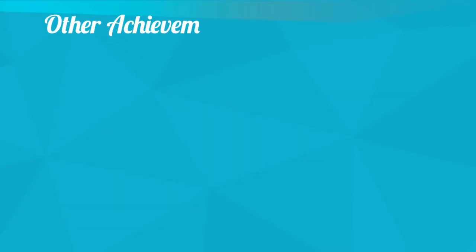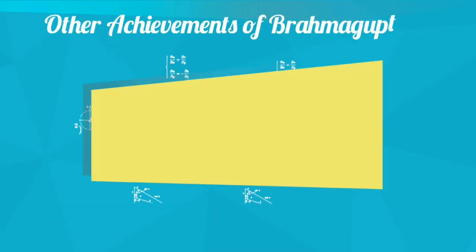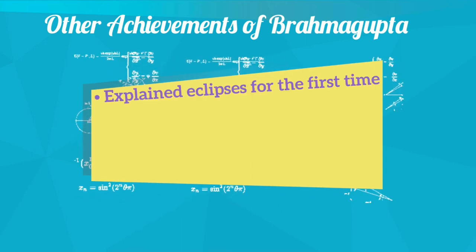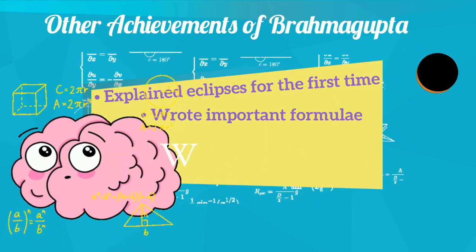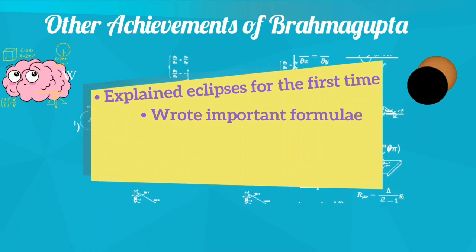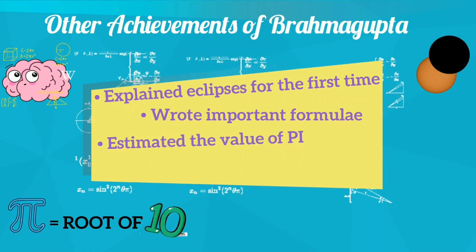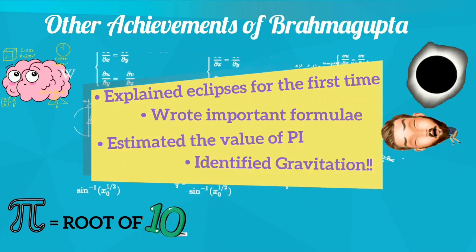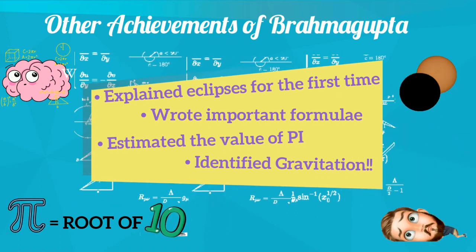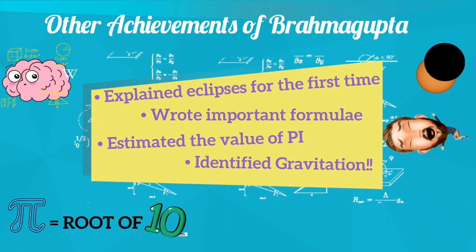Though known for the advent of zero, Brahmagupta has many firsts to his name: explanation of eclipses, concepts of trigonometry, geometry and many other important formulae, estimation of the value of pi, and even gravitation. That's right. He was the first one to identify gravity, a thousand years before Newton.